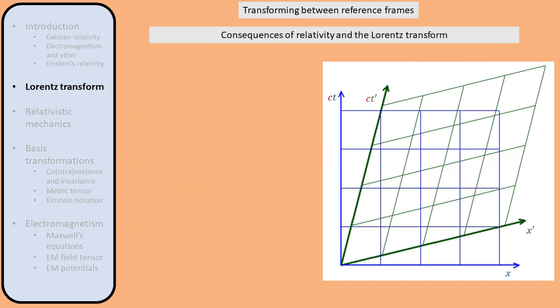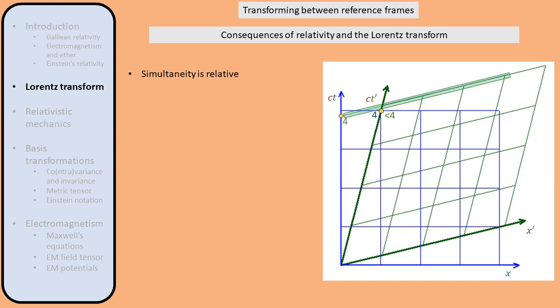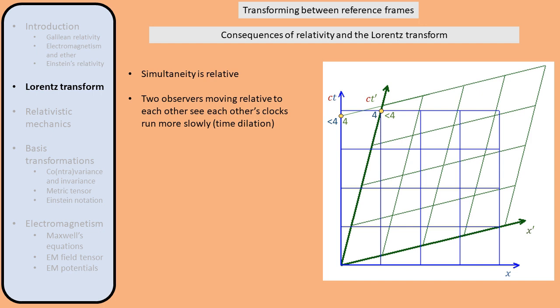So let's look at some further consequences of the Lorentz transform. We saw that simultaneity is relative, which is a direct consequence of tilting the x-axis. To see how the Lorentz transform affects the passing of time for different reference frames, let's consider a specific point in spacetime. In the stationary reference frame, it corresponds to 4 units of time having passed. However, in the moving reference frame, less than 4 units of time have passed, so a stationary observer sees the clock of a moving person tick more slowly than their own stationary clock. But keep in mind that the moving person is stationary in their own reference frame and sees the other person moving. And indeed, we see in the spacetime diagram that if 4 units of time have passed in the moving reference frame, less than 4 units of time have passed in the stationary reference frame. So two observers moving relative to each other see each other's clocks run more slowly. This phenomenon is called time dilation, and it has been verified experimentally by observing muon lifetimes.